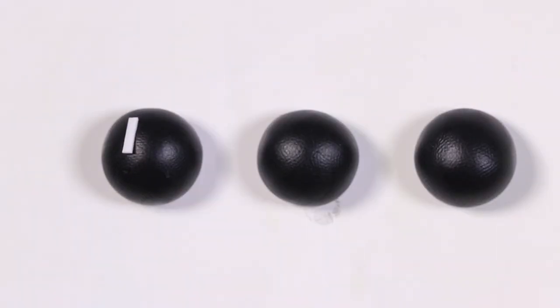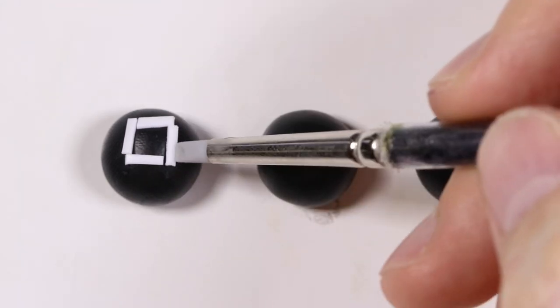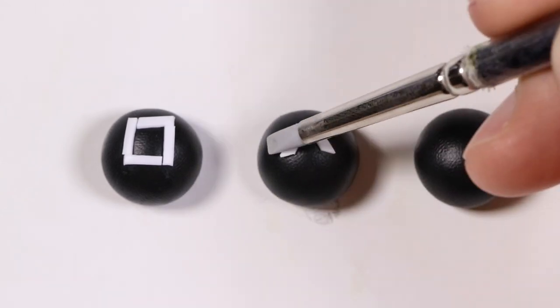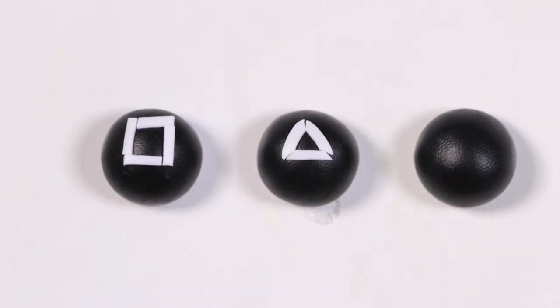And then I'm going to take some little strips of white clay and make out a couple of shapes. First, I'm going to make a square and then a triangle, and finally a circle.